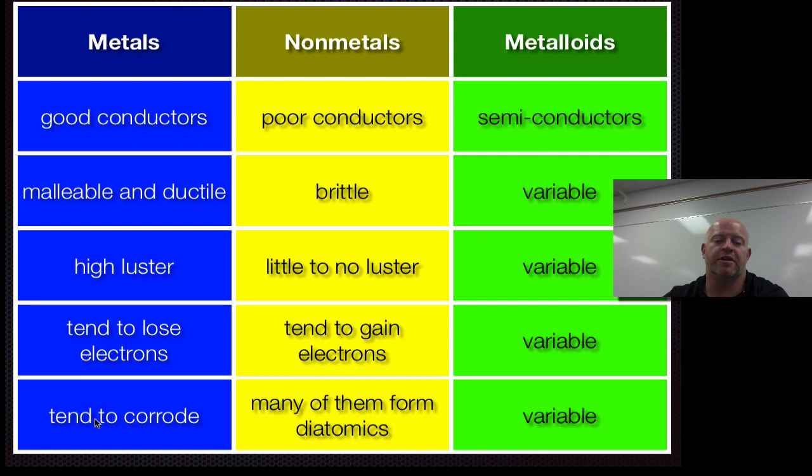And then metals tend to corrode. So if you look at metals, they tend to combine with oxygen pretty easily and to corrode or to rust basically. And then non-metals, a lot of our non-metals form those diatomics that we talked about before. So instead of corroding or rusting and attaching to oxygen, they tend to bond with themselves if they can forming diatomics.